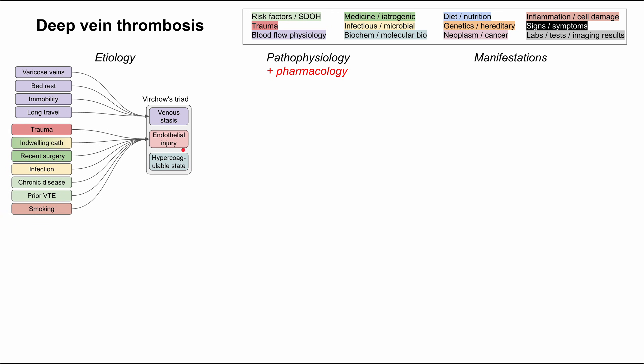Endothelial injury can result from direct injury to the endothelium after trauma, like a motor vehicle accident. Indwelling catheters, like a central line that's been in too long, can cause endothelial injury. Recent surgeries where the surgeon may have been manipulating the veins or vasculature, infections, and any chronic disease causing an inflammatory state can also injure the endothelium. Prior venous thromboembolisms can cause endothelial injury as well.